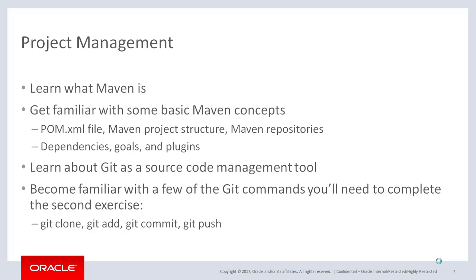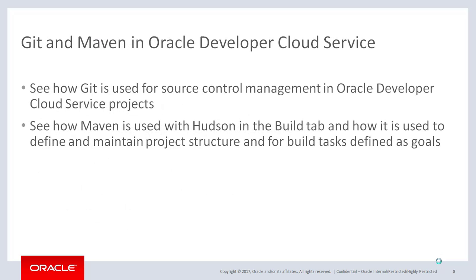Those commands are Git clone, Git add, Git commit, and Git push. In the Git and Maven in Oracle Developer Cloud Service segment, you'll learn how Git is used for source control management in Oracle Developer Cloud Service projects. You'll also see how Maven is used with the Hudson Build system in the Build tab, and how it is used to define and maintain project structure and for build tasks defined as goals.